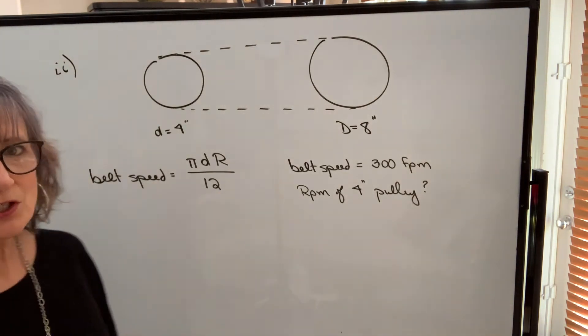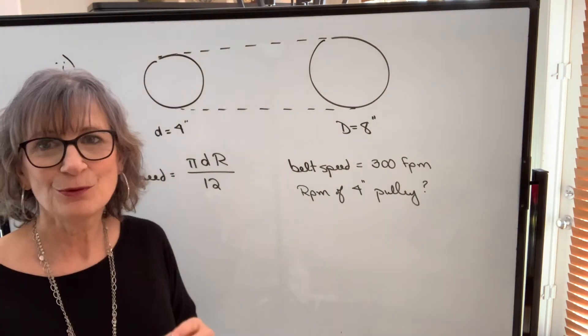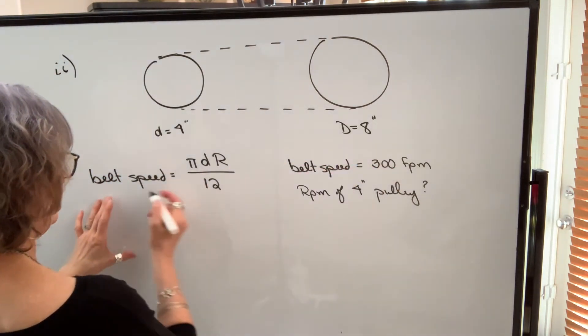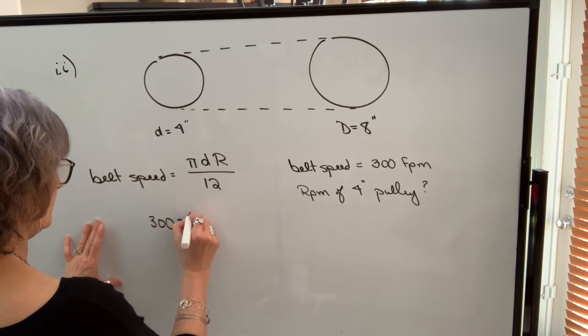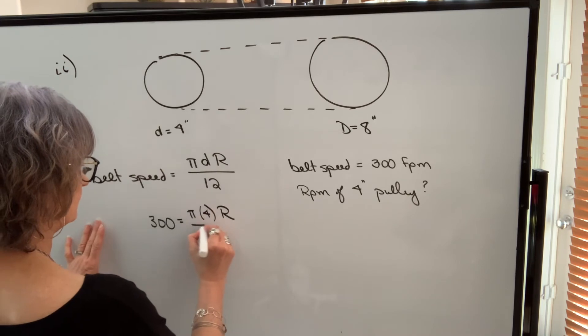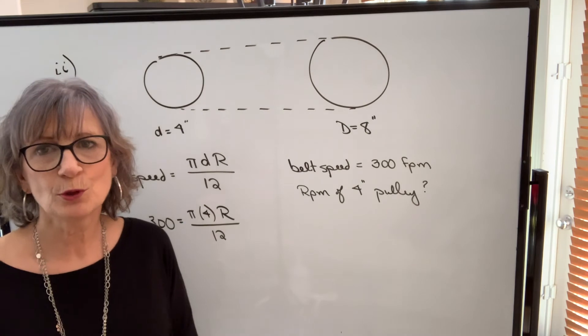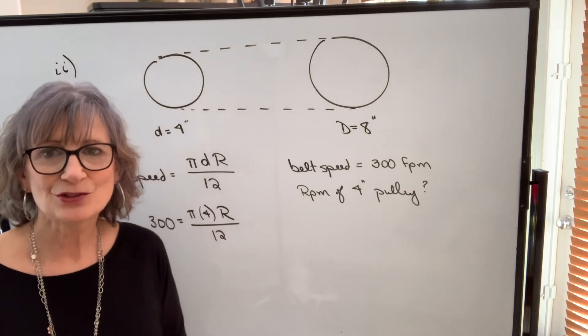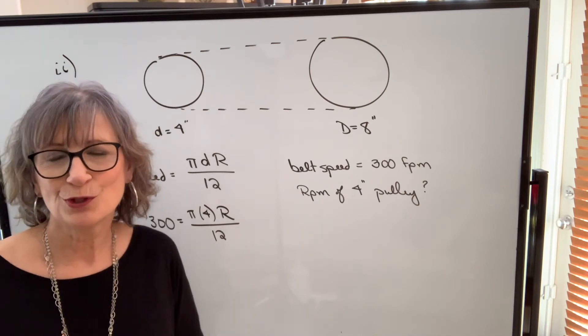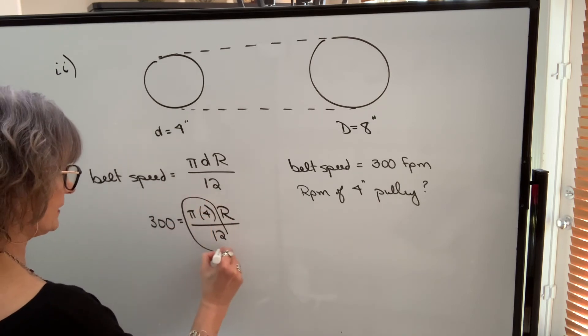So this question is a little trickier because we're not just plugging our values into this and calculating, we're going to have to use some algebra. So I put in 300 feet per minute for belt speed, I put 4 in for diameter and I don't know R. There are a couple of different approaches that you can use in solving this equation. I will do it two different ways and you can choose what you prefer.